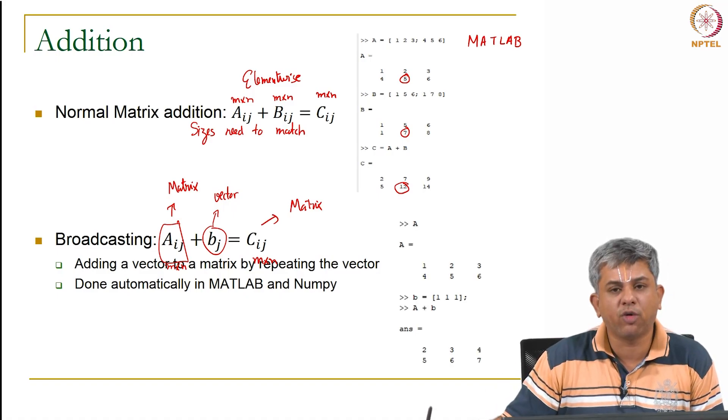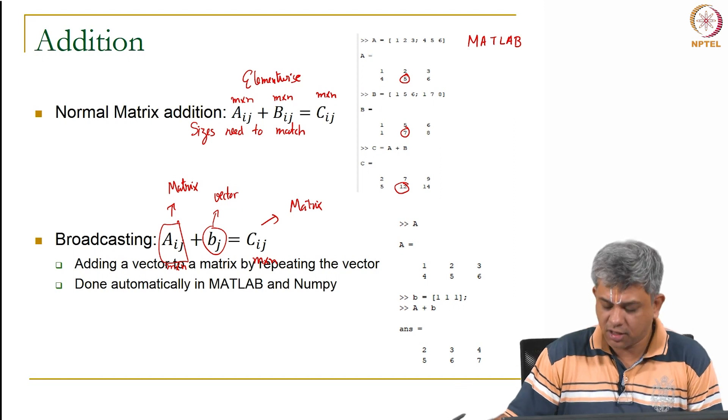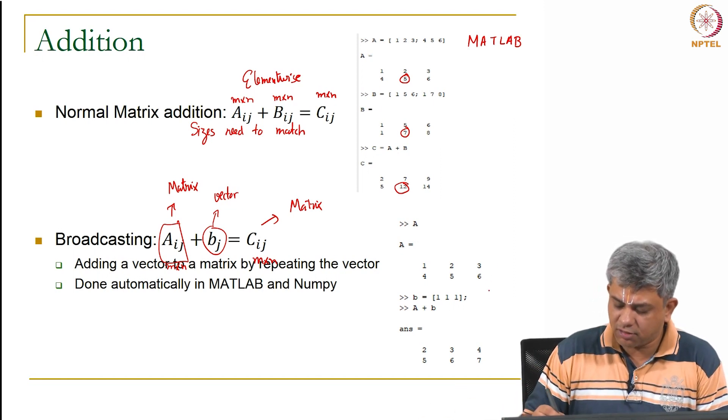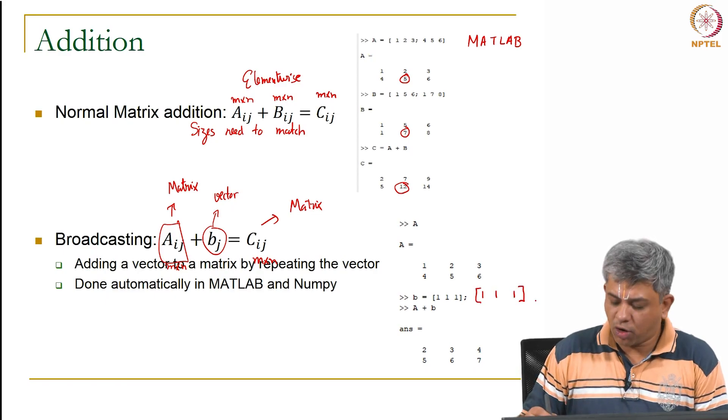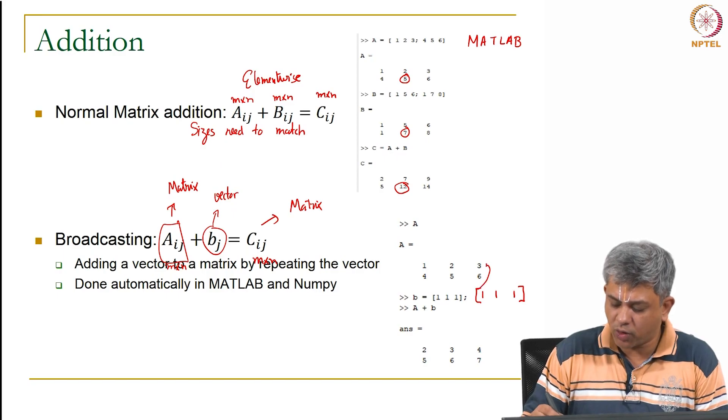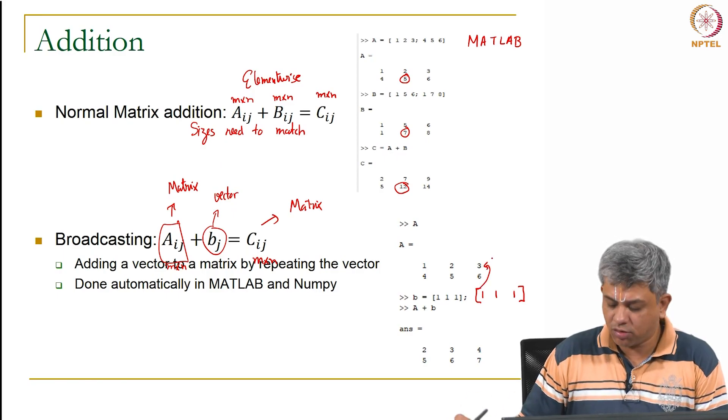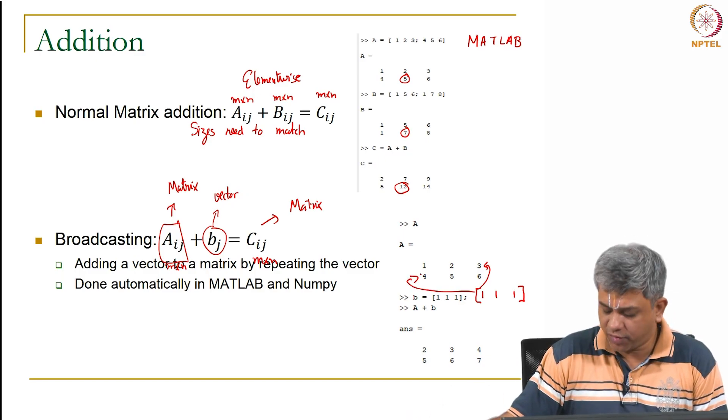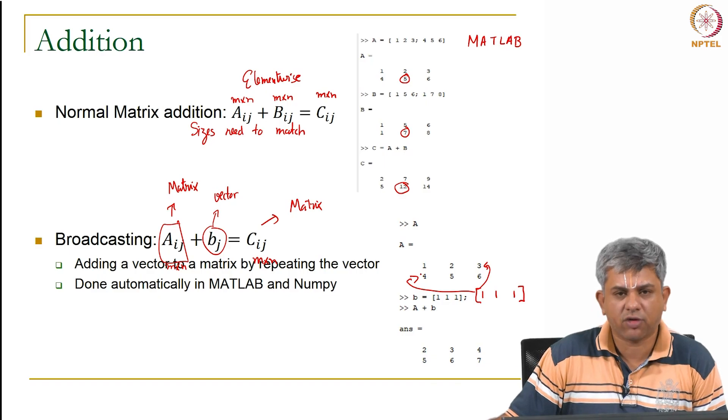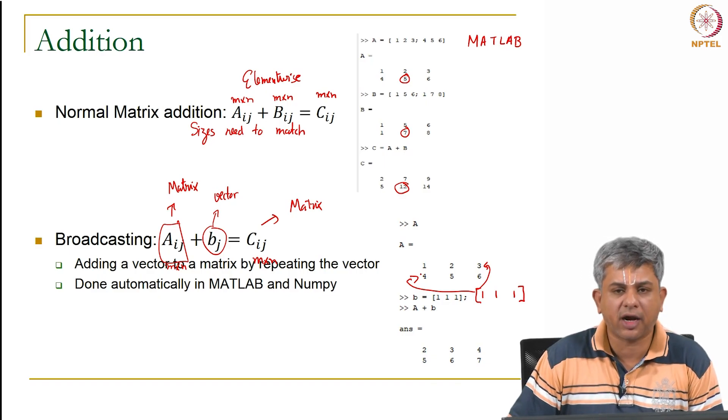Just to show you an example, let us say A is the same old 1, 2, 3, 4, 5, 6 and B is in this case the row matrix 1, 1, 1. Then all you need to do is this 1, 1, 1 gets added to the first row gives you 2, 3, 4. It also gets added to the second row which is 4, 5, 6 and gives you 5, 6, 7.